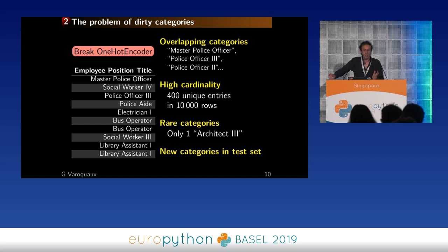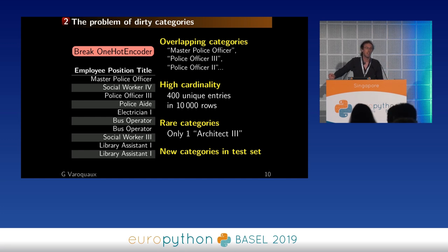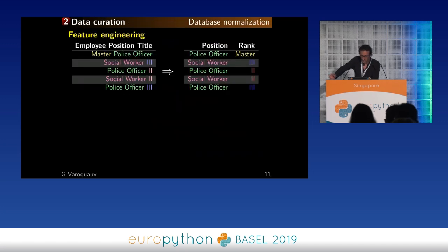Finally, though it's a detail, it's a real problem in practice: we might have new categories in the test set. Basically, one-hot encoder doesn't work well at all with this kind of data, and sometimes we have this kind of data.